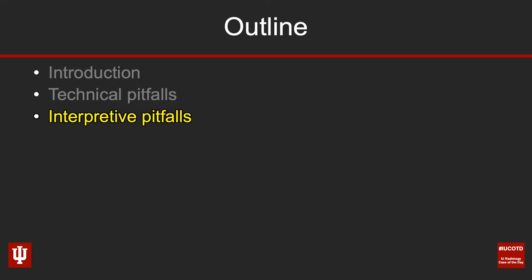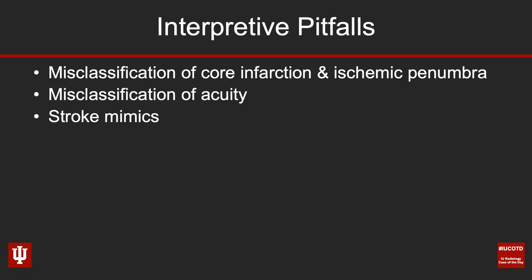Next we're going to move on to some interpretive pitfalls, which can be broadly classified into three categories. We'll start with misclassification of the core infarction and ischemic penumbra.